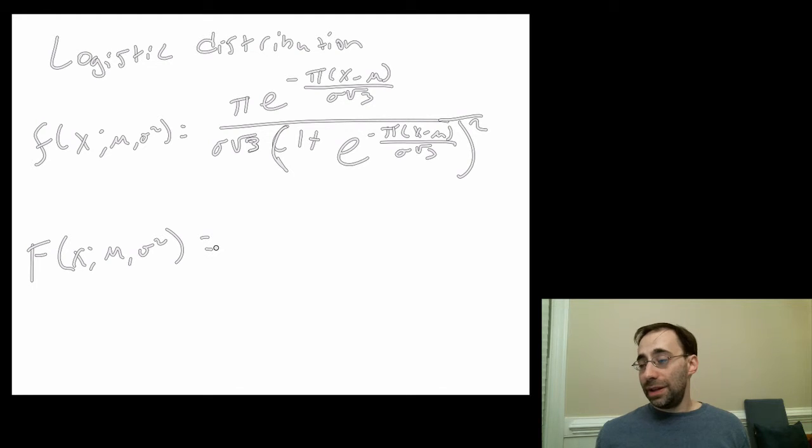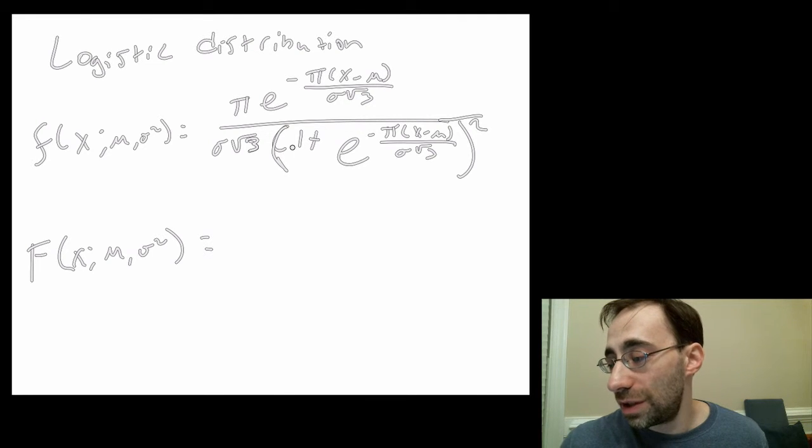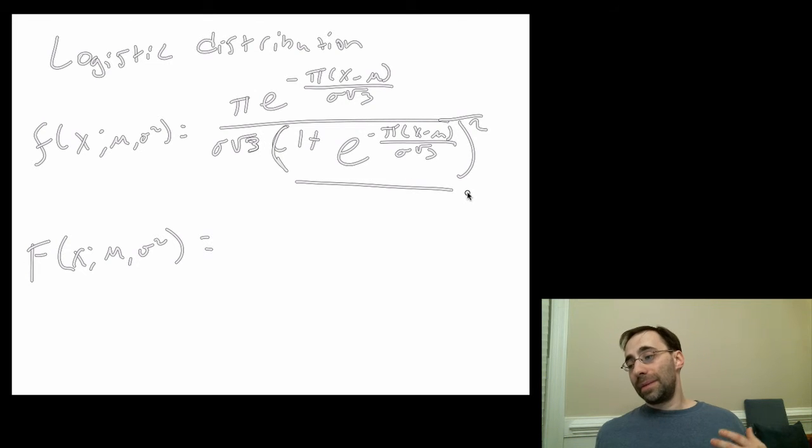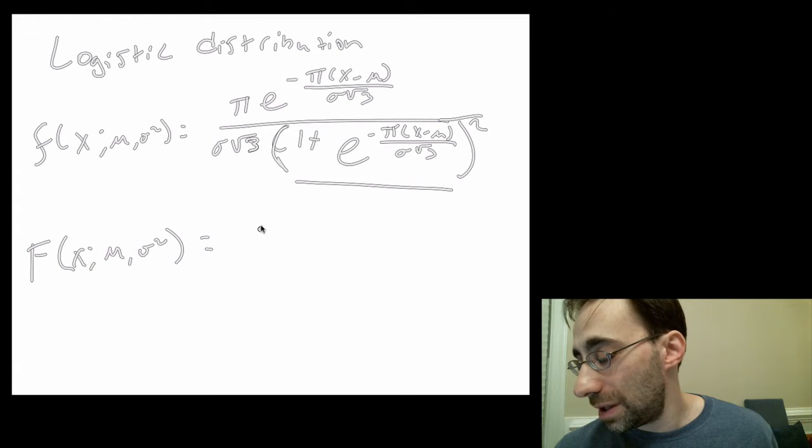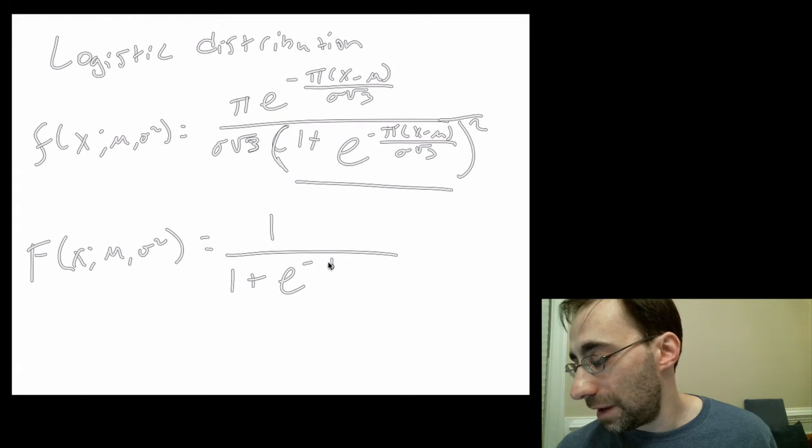If you decide u is this whole thing in here, 1 + e to the something, then the derivative of that is the numerator of that function. Everything cancels. You get the integral of 1/u². That's -1/u, and that gives you the CDF, which is just 1/(1 + e^(-π(x-μ)/(σ√3))).